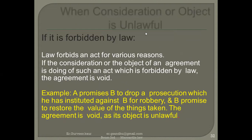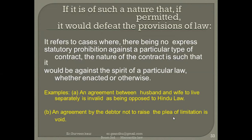When the consideration or object is unlawful, it is forbidden by law. Law forbids acts for various reasons. If the consideration or object of an agreement is an act forbidden by law, the agreement is void. For example, A promises B to drop a prosecution which he has instituted against B's robbery, and B promises to restore the value of the things taken. The agreement is void as the object is unlawful — robbery is forbidden by law, it is morally wrong, and cannot be taken to court.